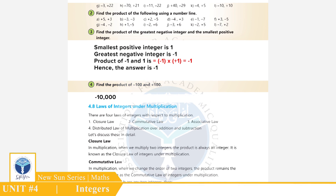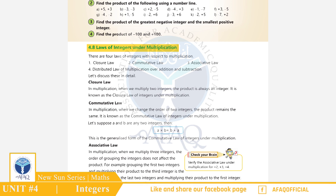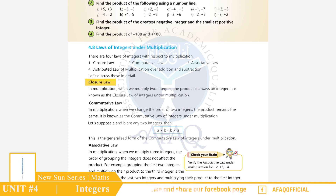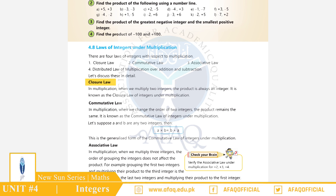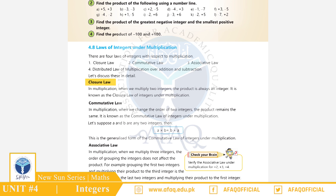अगला Topic है 4.8 Laws of Integers under Multiplication. Closure Law کہتا ہے کि जब भी दो integers multiply होंगे तो इनका product एक integer ही होगा। Commutative Law: